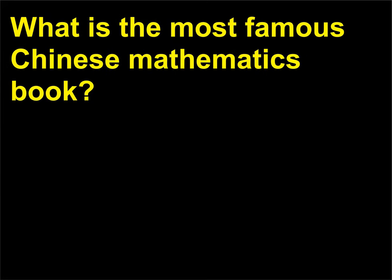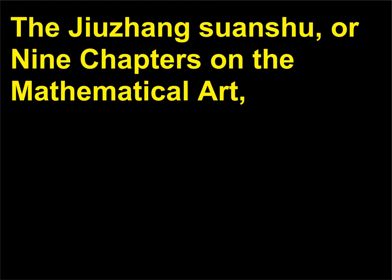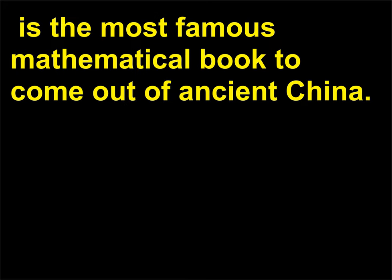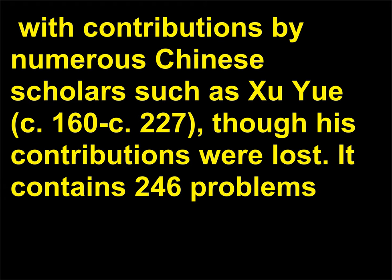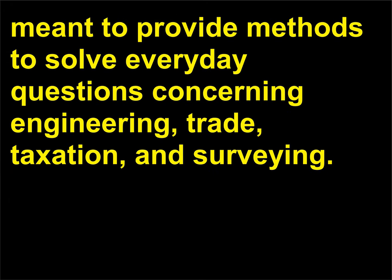What is the most famous Chinese mathematics book? The Jiuzhang Suanshu, or Nine Chapters on the Mathematical Art, is the most famous mathematical book to come out of ancient China. This book dominated mathematical development for more than 1,500 years, with contributions by numerous Chinese scholars. It contains 246 problems meant to provide methods to solve everyday questions concerning engineering, trade, taxation, and surveying.